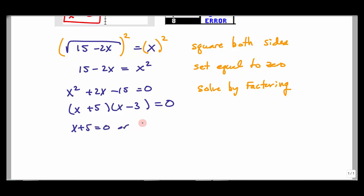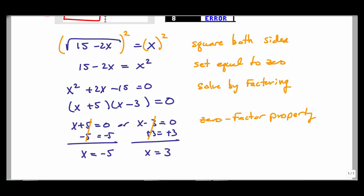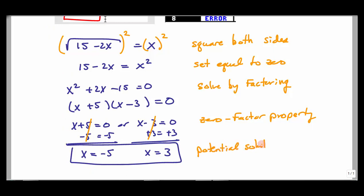Using the zero factor property: x + 5 = 0 or x − 3 = 0. Subtracting 5 gives x = −5; adding 3 gives x = 3. That's strange — we didn't see x = −5 in our solutions. These are potential solutions. We must check for extraneous roots. We already know from graphing that x = 3 is the solution and x = −5 is extraneous, but let's verify by hand.